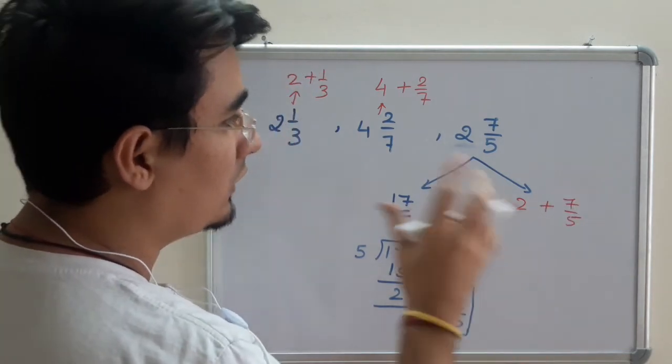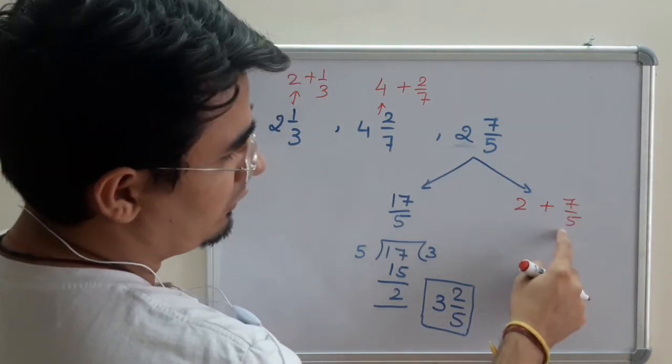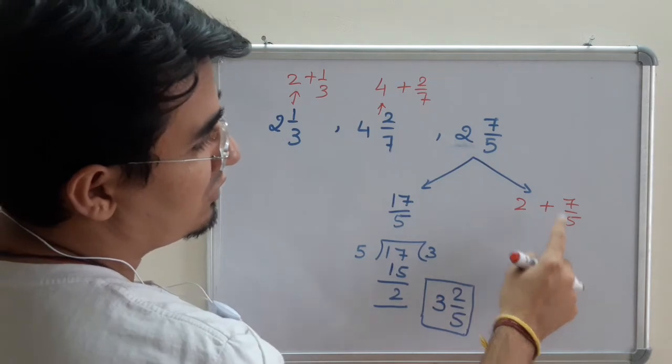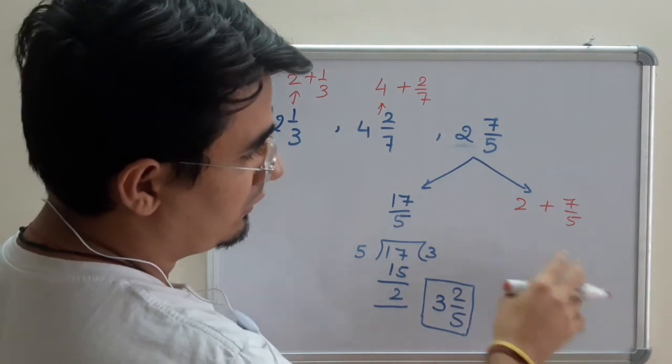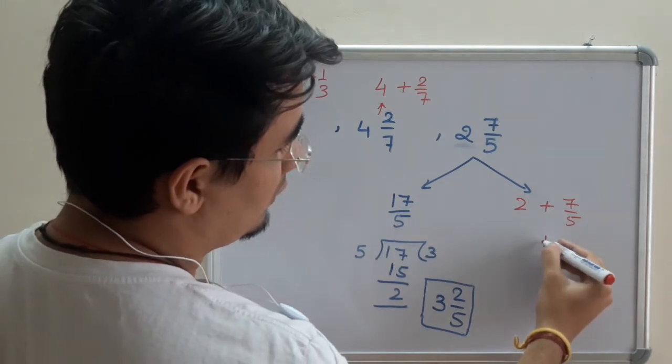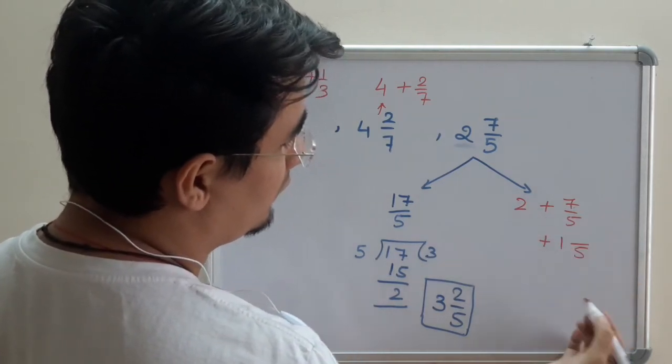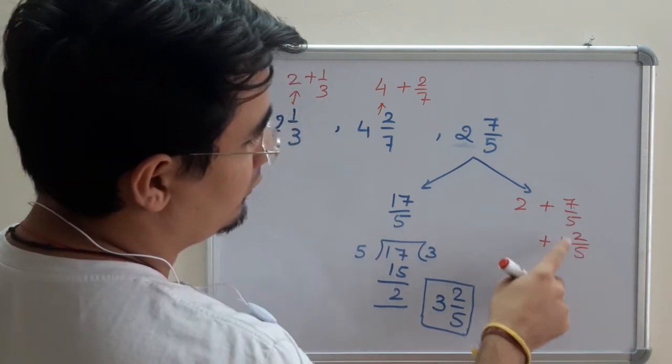But this is an improper fraction. So improper fraction can be converted into a proper fraction without even division. I can write it as 5 times 1 plus 2, remainder.